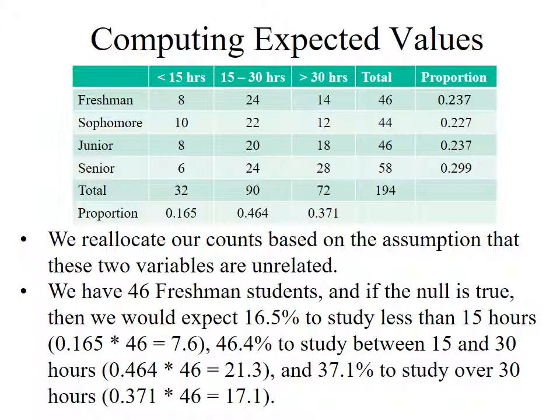First, I compute the row sums and column sums. I have a total of 46 freshmen, 44 sophomores, 46 juniors, and 58 seniors. And I have 32 students who spent less than 15 hours studying per week, 90 who spent 15 to 30 hours, and 72 who spent over 30 hours. Then I divide these totals by 194 to get proportions. The proportion who spent less than 15 hours is 0.165, or 16.5%. Those who spent 15 to 30 hours: 90/194 = 0.464, or 46.4%. And 72/194 = 0.371, or 37.1%, spent over 30 hours.